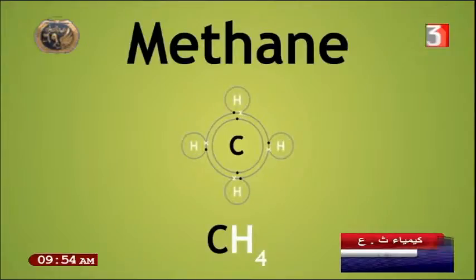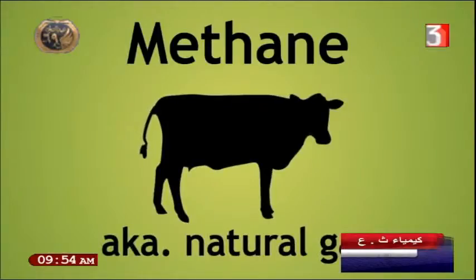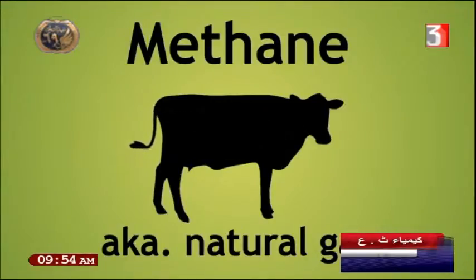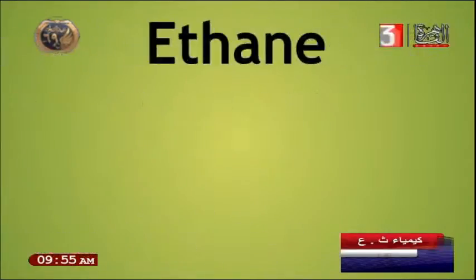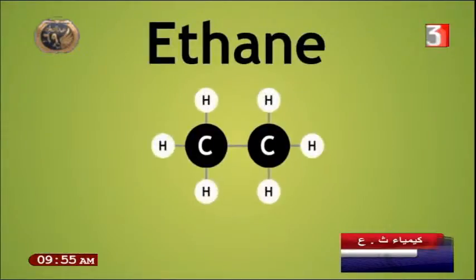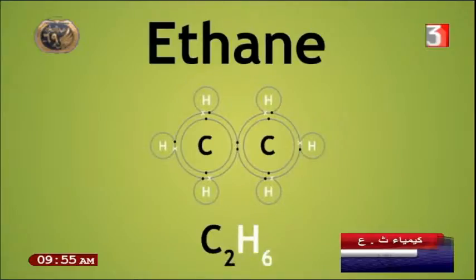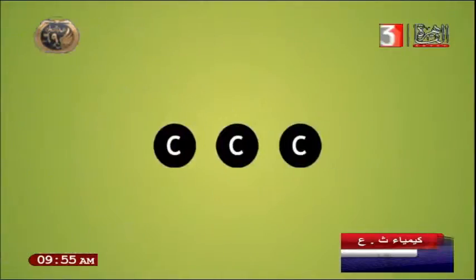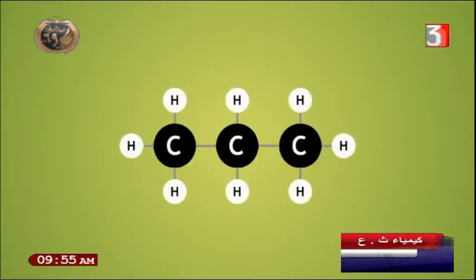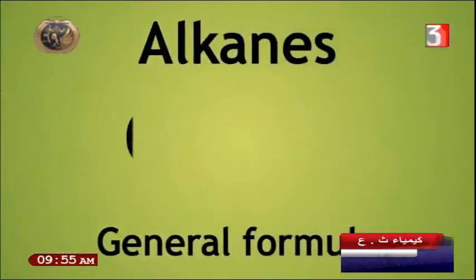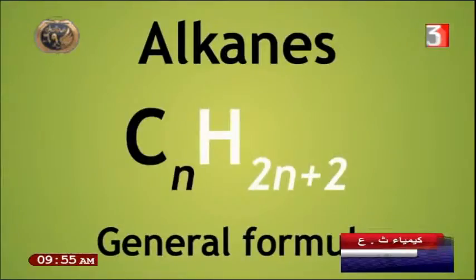Methane is obtained as natural gas from animal remains and is used in homes because it is highly flammable — due to the single bond. Ethane (C2H6) has two carbons sharing two electrons in a single bond. Propane (C3H8) and butane (C4H10) also follow the general formula CnH2n+2 for saturated hydrocarbons.